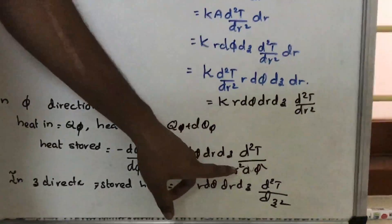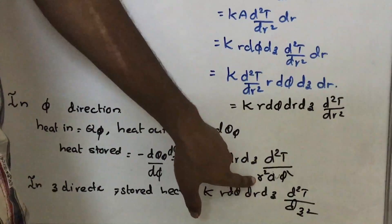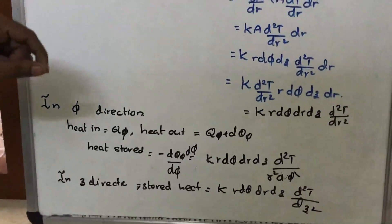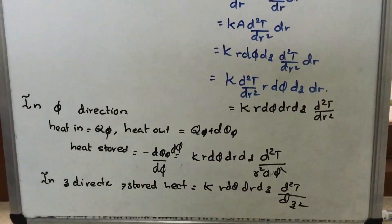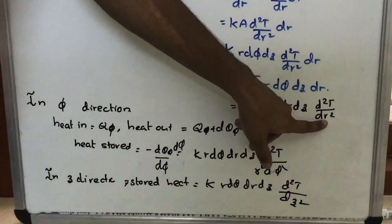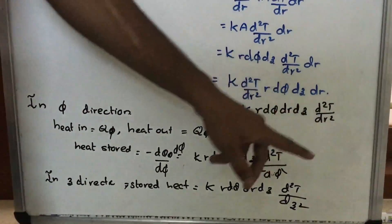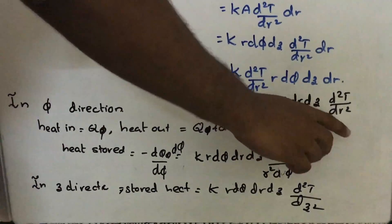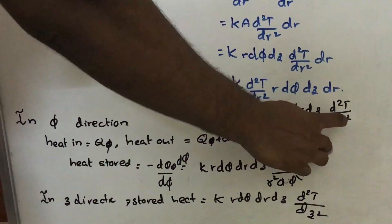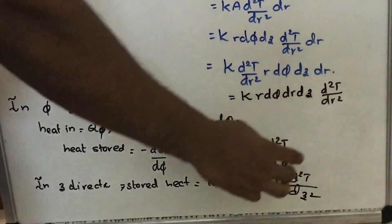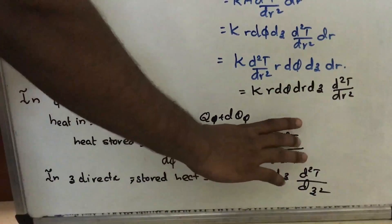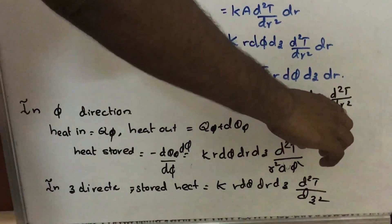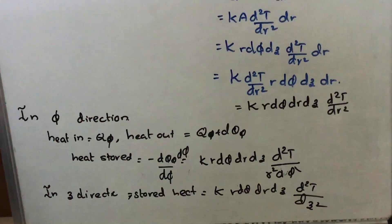Along with dφ² we put an r² in the denominator to get the proper form. That's how we get the energy stored in the φ-direction. Now in the z-direction, substitute z for r, and we get the energy stored in the z-direction.